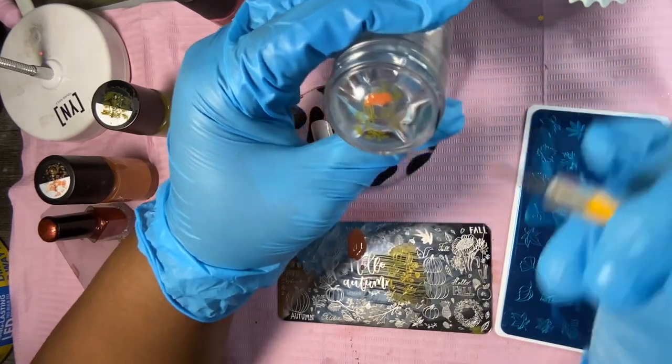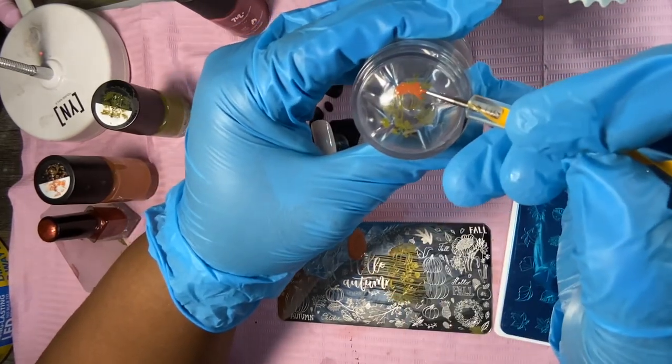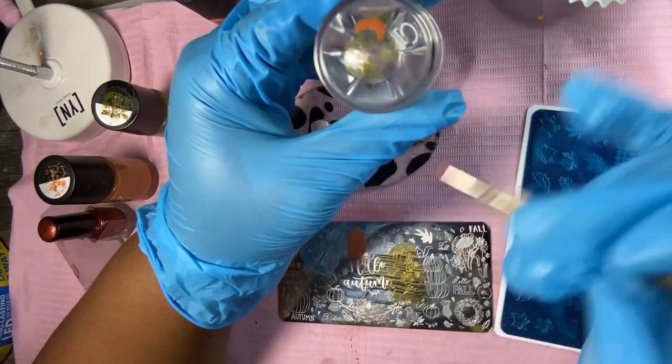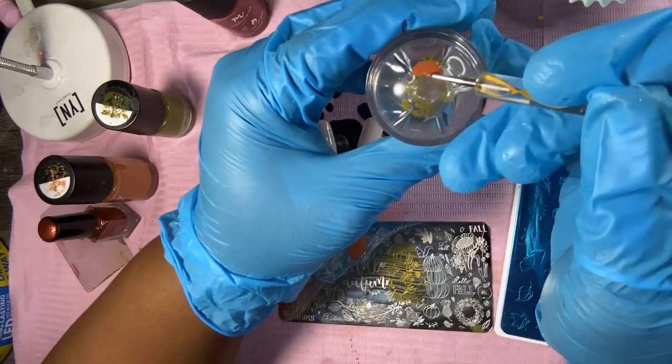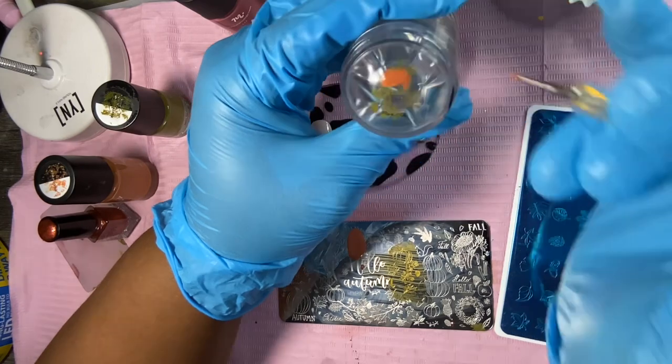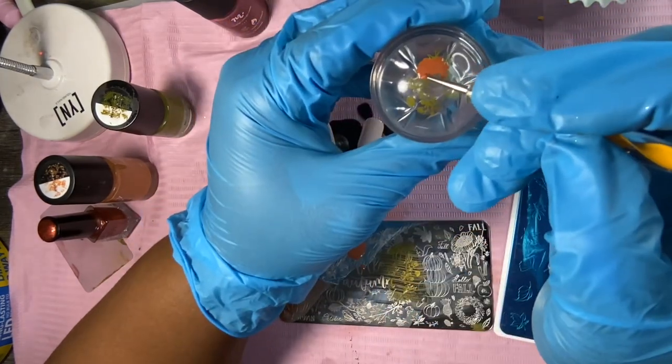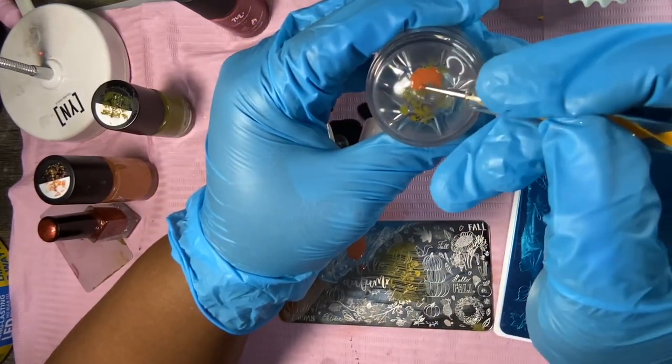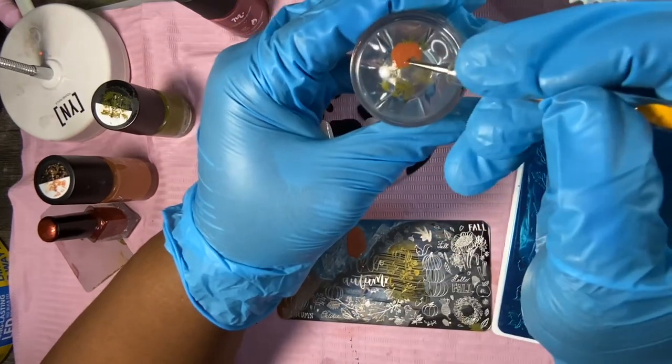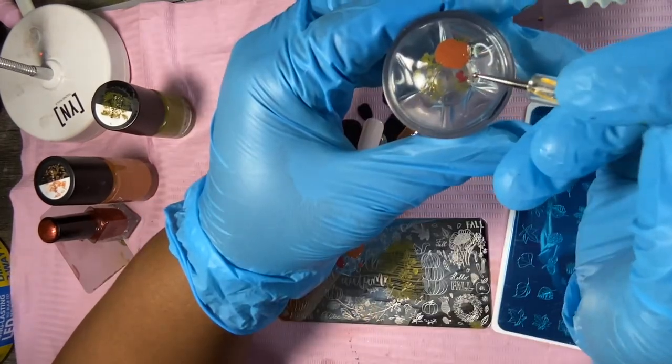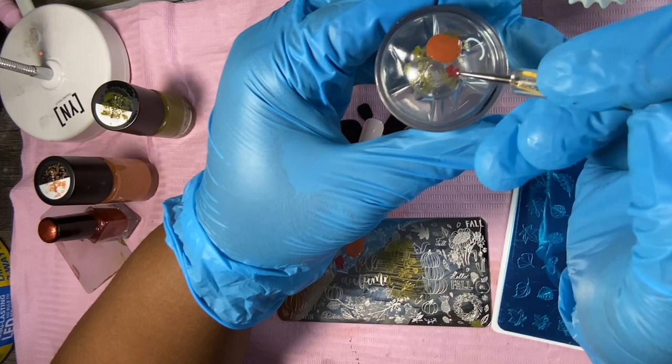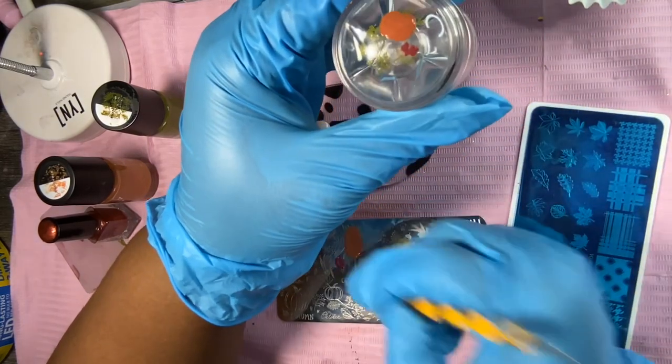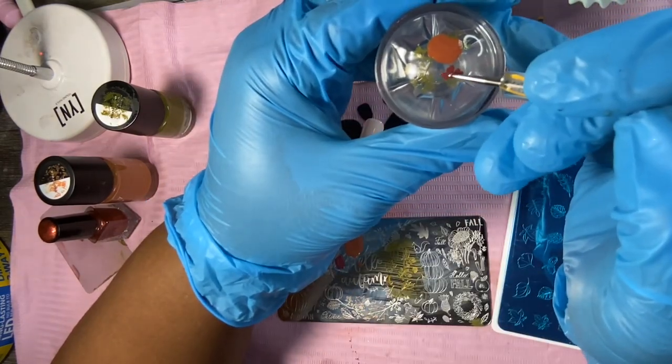So once you twist the plunger up, if you twist it too far up it will pop out of place. If you twist it too far down to shrink the image, it's going to pop out of place. No matter what you did, it popped out of place.